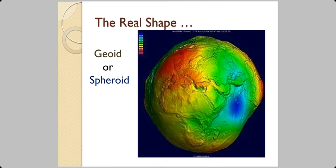Now, this is close to what our Earth actually looks like. This is the geoid or the spheroid shape.